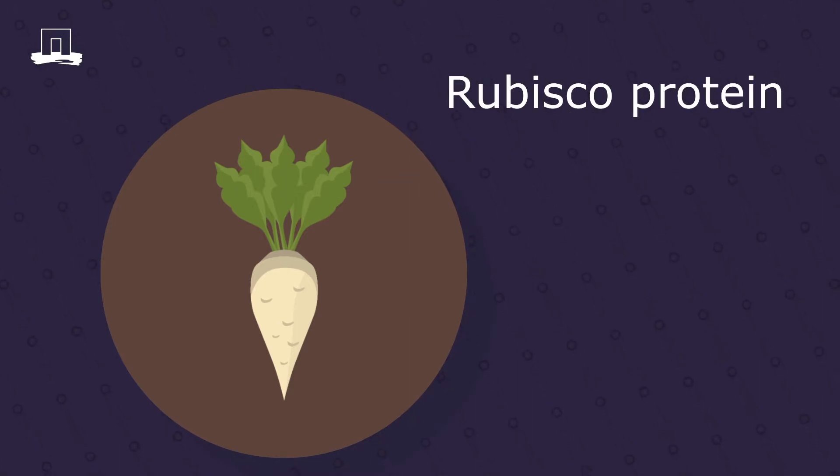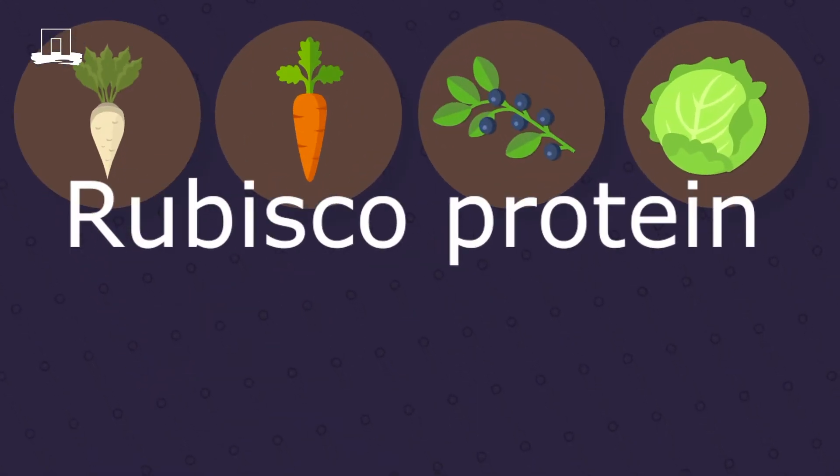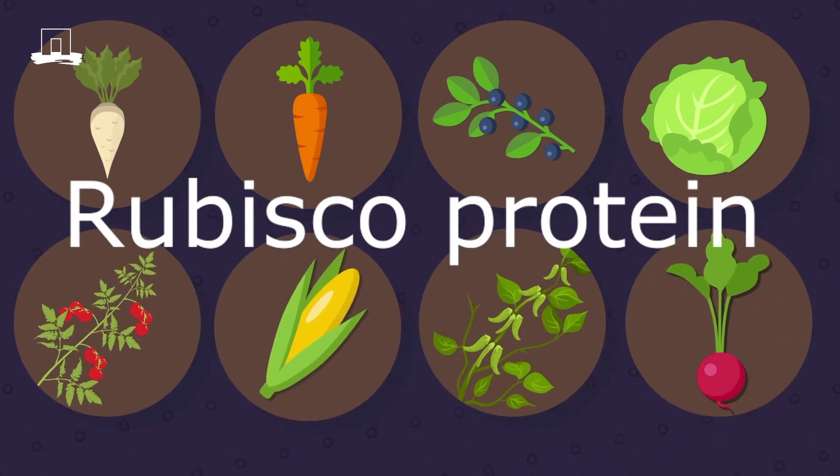Rubisco is an interesting protein to extract. It's present in large quantities in leaves of all green plants. But what happens to the proteins after harvest?